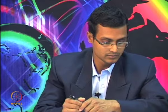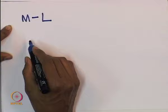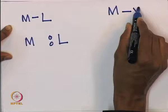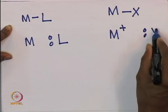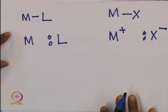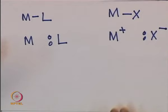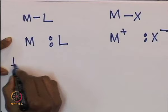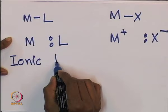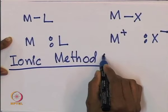For example, if we have a metal-ligand complex ML, for the covalent method we will be considering the metal and ligand in a neutral configuration. For example, if we have MX for the ionic method, we will be considering M⁺ and X⁻. For simplicity, I will be discussing mainly the ionic method, as that makes things a little bit easier.